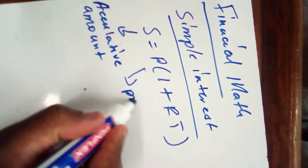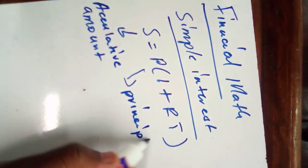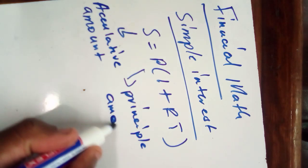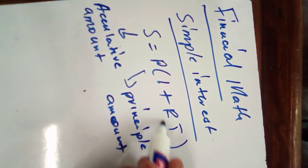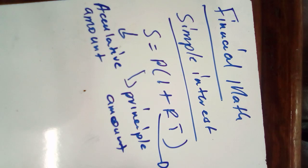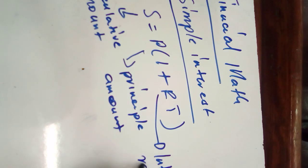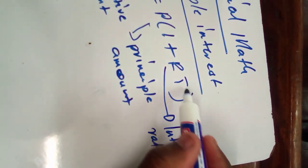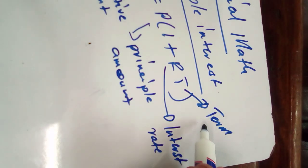P is the principal amount, and then R is interest rate. R is an interest rate. And then T is term, which means number of years.